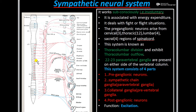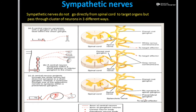One exception is a preganglionic neuron which comes out from the spinal cord and passes through the celiac ganglion, then branches and goes directly to the target organ — the adrenal medulla. The adrenal gland's medulla region is supplied directly from the spinal cord, so no synapse is formed. This is the only exception: the sympathetic nerve supplying the adrenal medulla does not form any synapse and comes directly from the spinal cord to the target organ. All remaining sympathetic nerves follow the three pathways.